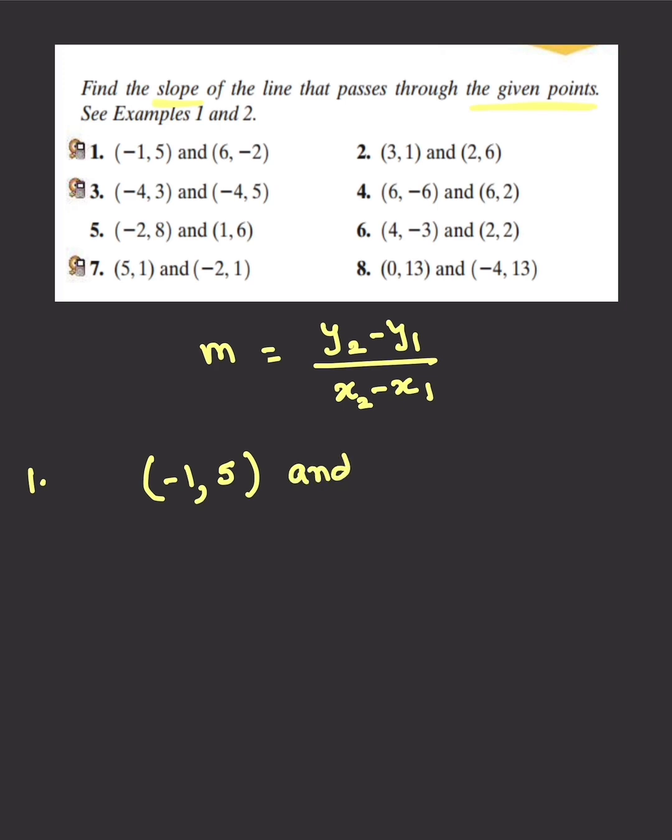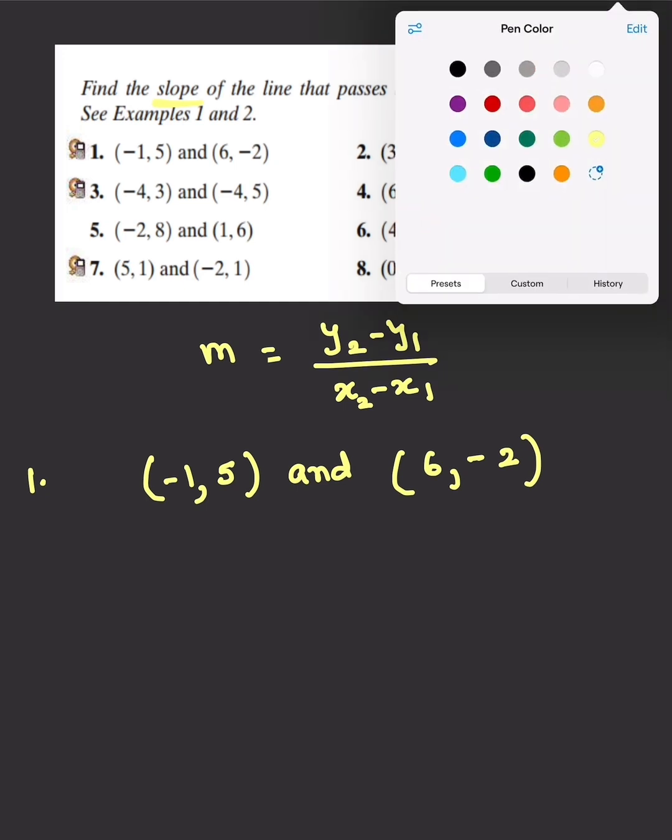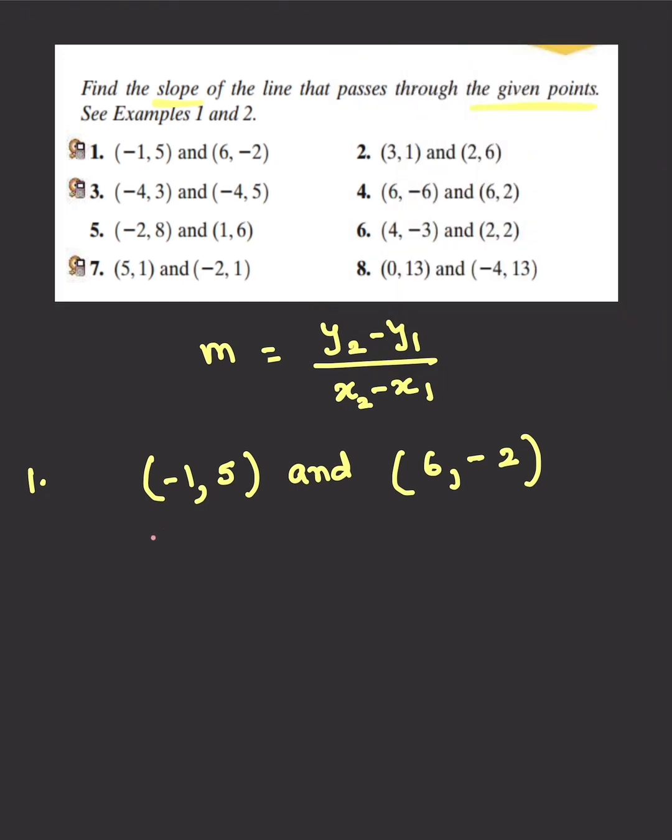Question number one is (-1, 5) and (6, -2). Now what I do in this case is I always like to write down my x1, y1 and x2, y2. Remember, it doesn't matter—you can choose any coordinate set to be x1, y1 and x2, y2.